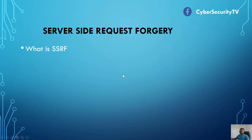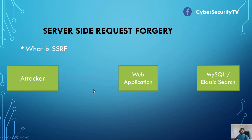SSRF is a web security vulnerability that allows an attacker to induce server-side applications to make HTTP requests to an arbitrary domain of the attacker's choosing. Let's take a look at a diagram of how it works. Suppose there's a user interacting with an application — say Gmail, Facebook, or any XYZ application. When you're interacting with it, there are many more components in the back-end, such as a database or Elasticsearch, which are hidden from the user and only accessible by the application component.